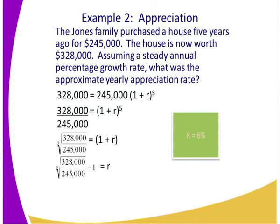Let us take the next example. A young family purchased a house 5 years ago at US$245,000. The house is now worth $328,000. Assuming a steady annual percentage growth rate, what was the approximate annual appreciation rate? Using the formula, 328,000 equals 245,000 × (1 + R)⁵. Solving this, we get the rate as 6%.